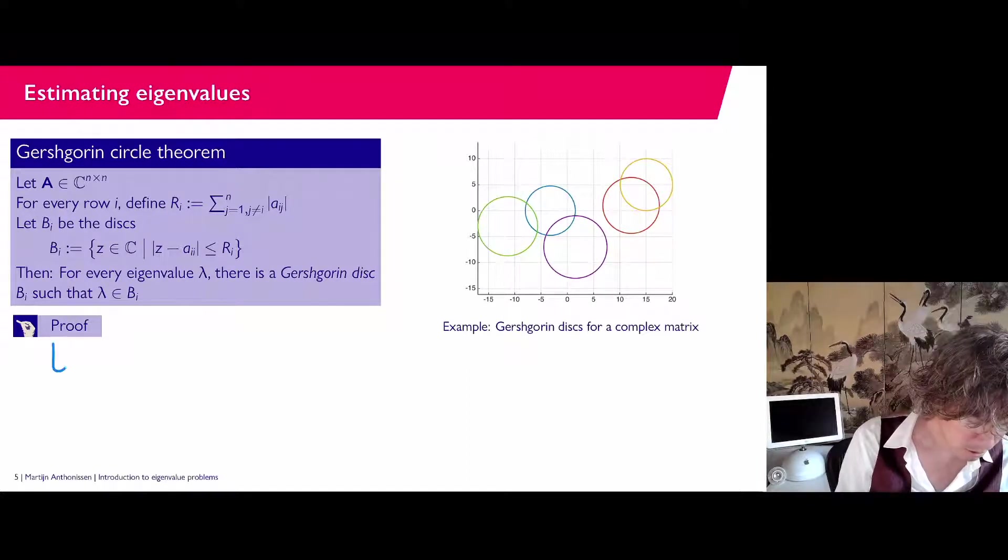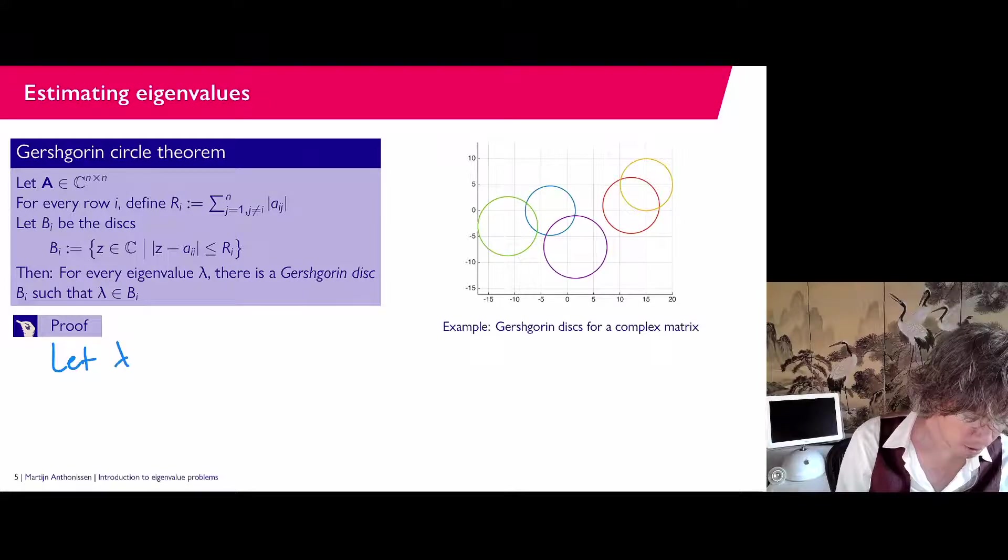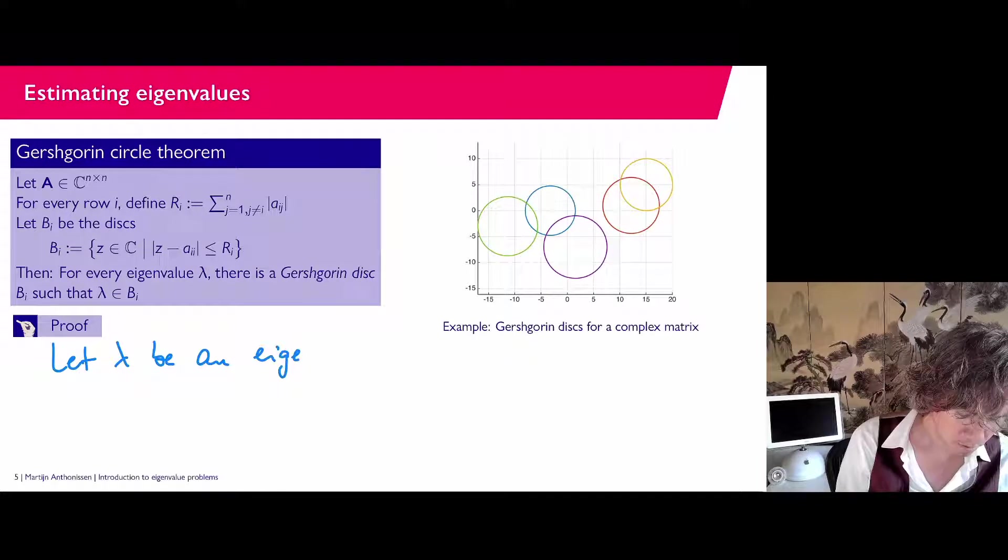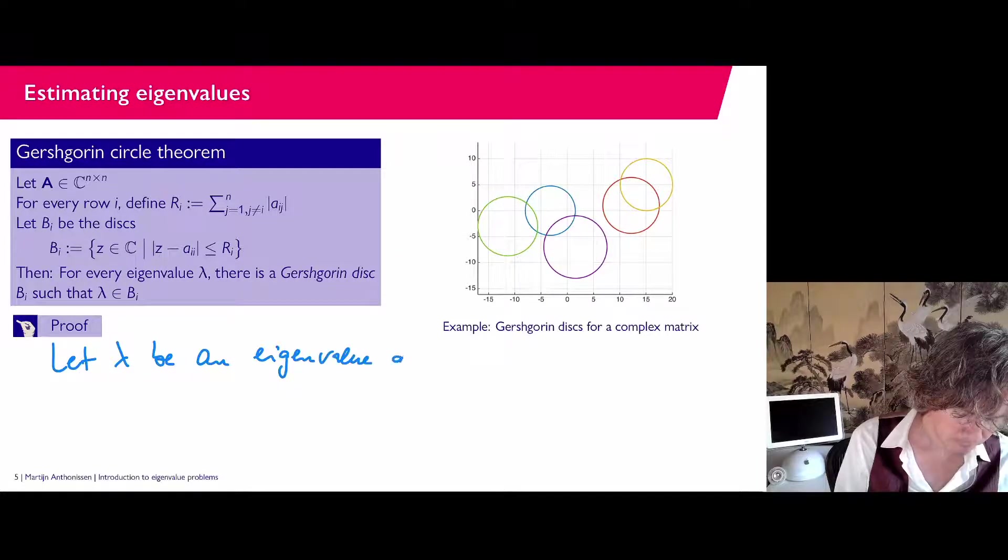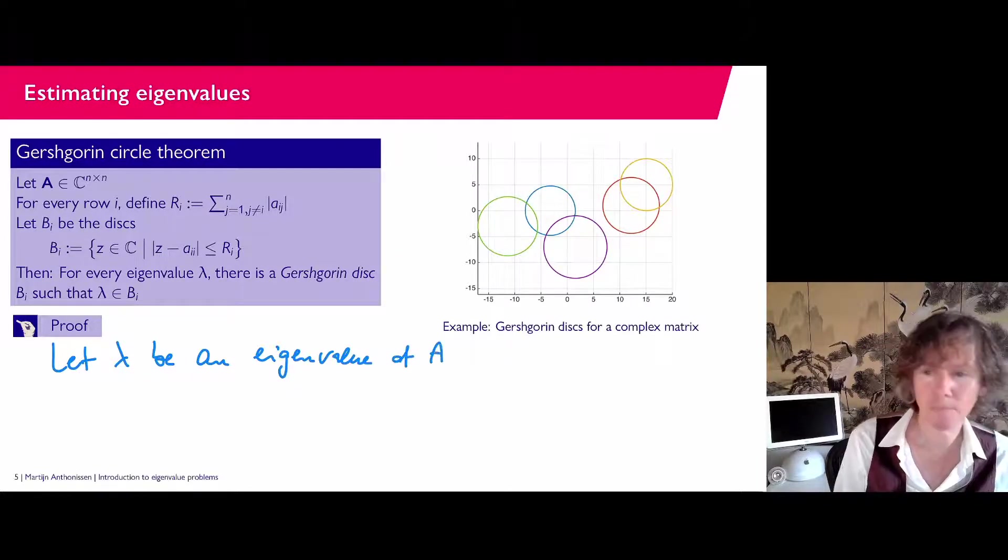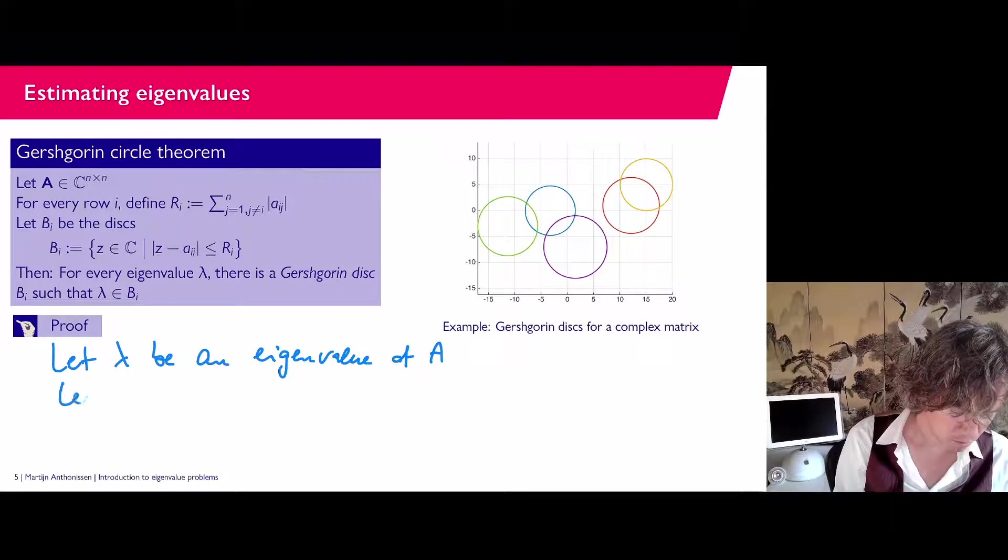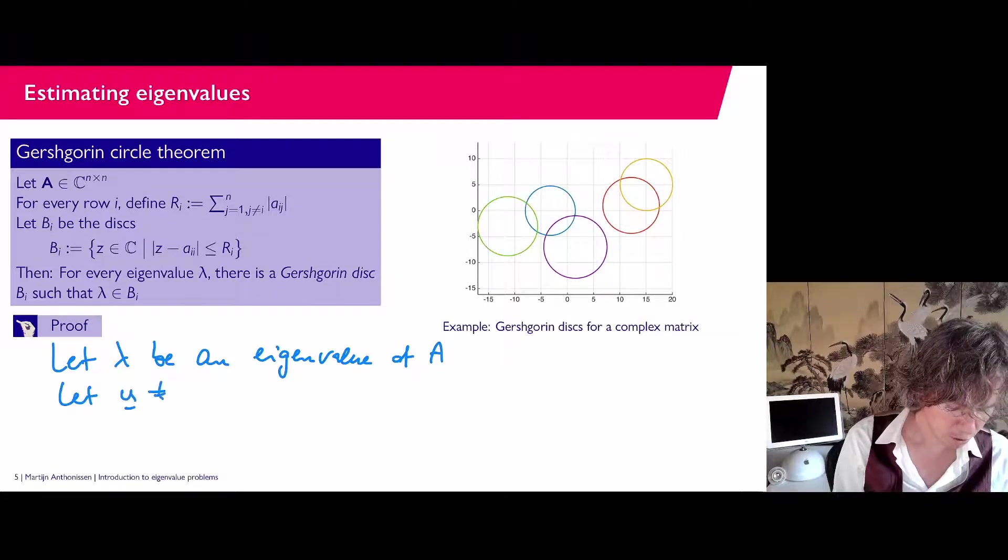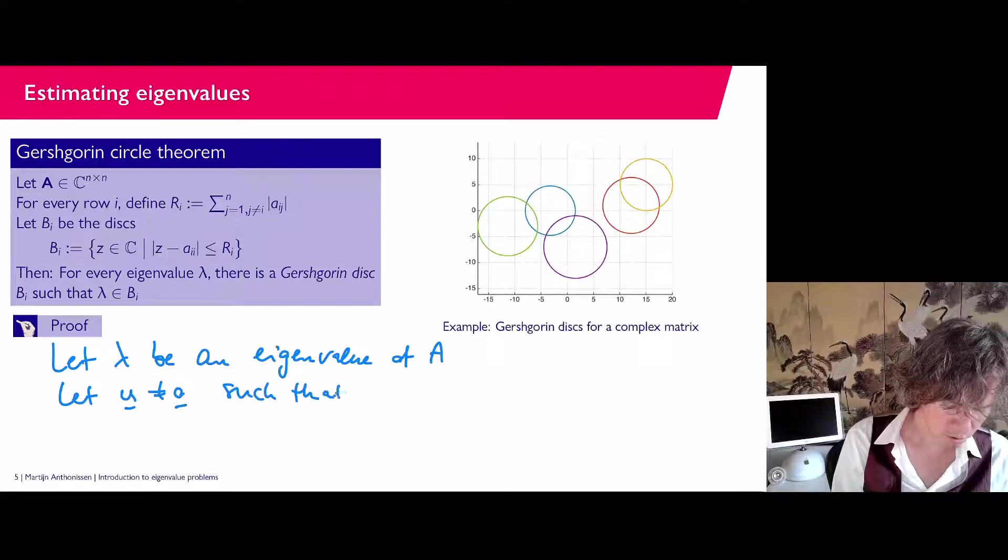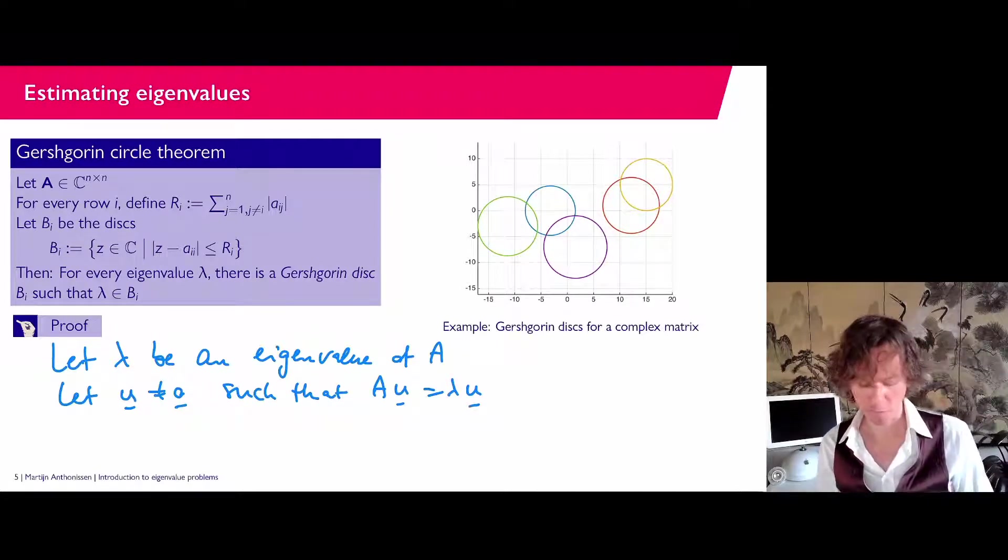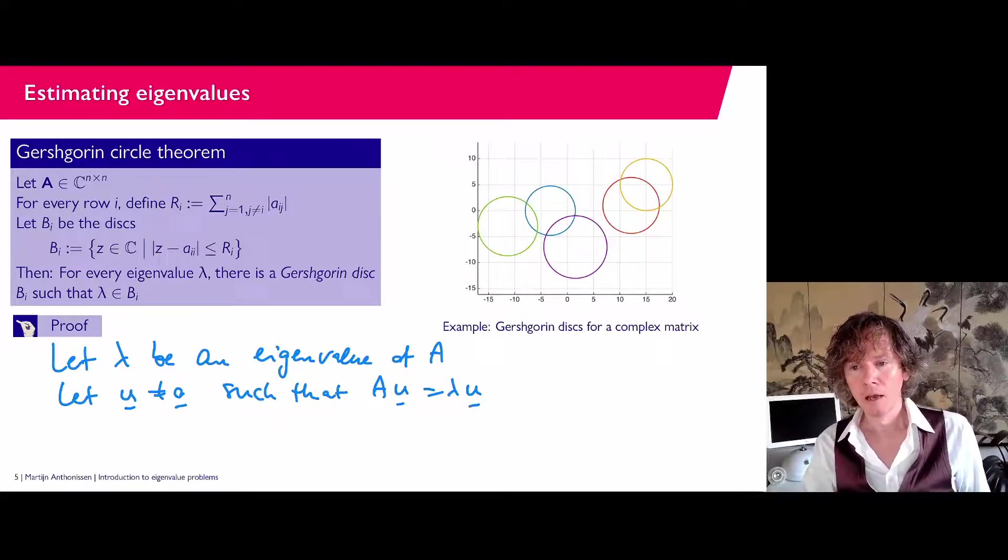So let λ be an eigenvalue of the matrix A. Of course, then I can find an eigenvector. So let U be unequal to zero, such that AU equals λU. So U is an eigenvector for the eigenvalue λ.